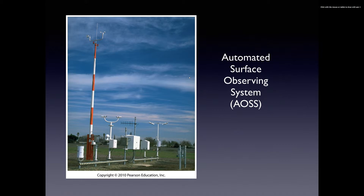The United States government deploys an enormous number of automated surface observing stations, located all over the state of Utah and all over the country. You can go to the NOAA website to see where these stations are located and get weather data from them. Anytime you're looking at temperature data on a site like weather.com, it's coming from one of these stations. They have things like temperature sensors, humidity sensors, wind sensors, and pressure sensors to gather information about what's going on.